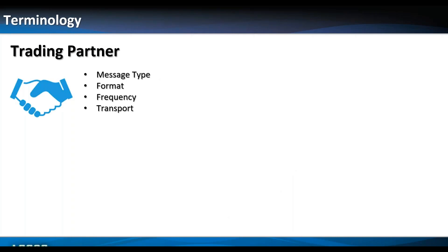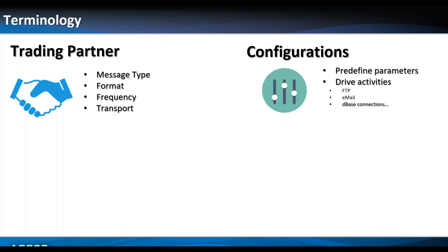Before the demo, just a little terminology. A trading partner can be external — a customer — or internal, an internal system. For each trading partner, we can define specific message types, such as traditional EDI orders, dispatch confirmations, invoices, credit notes, or anything else. The format defines how that message is received — JSON, XML, EDI X12, CSV, and so on. We also define how often to receive it and the transport method. We'll see more on trading partners later in the presentation.